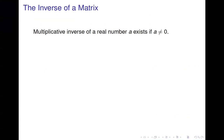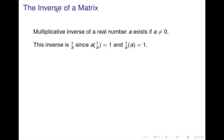Let's talk about the inverse of a matrix. First, let's go back and think about the inverse of just a scalar, a real number A. The multiplicative inverse, as opposed to the additive inverse, of a number A is just 1 over A, assuming A is not equal to 0, because if we multiply A times 1 over A, we get 1. And 1 is the identity element for multiplication.